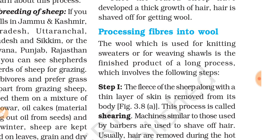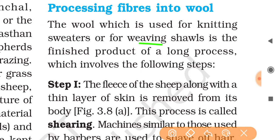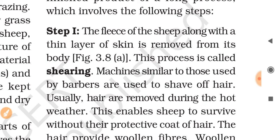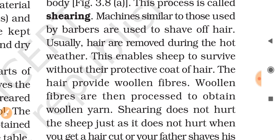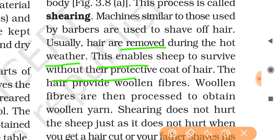Processing fibers into wool: the wool used for knitting sweaters or weaving shawls is the finished product of a long process involving the following steps. The first step is shearing — the fleece of the sheep along with a thin layer of skin is removed from its body. Machines similar to those used by barbers are used to shave off the hair. Usually hair is removed during hot weather, which enables the sheep to survive without their protective coat.